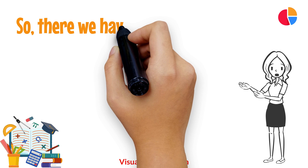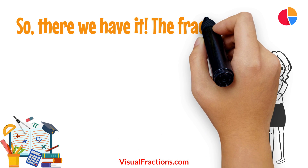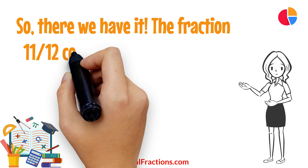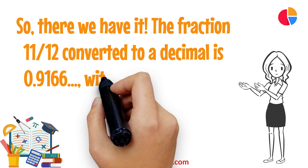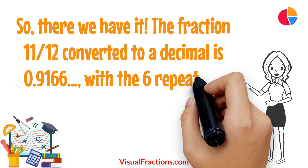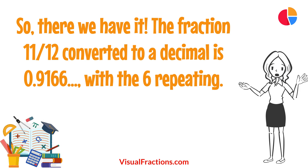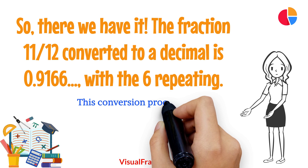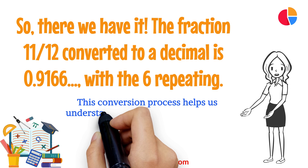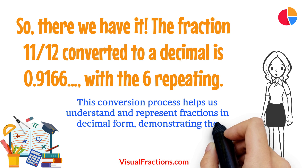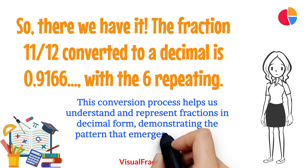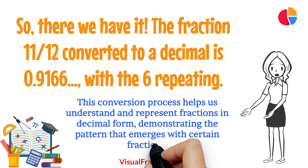So, there we have it. The fraction 11 twelfths converted to a decimal is 0.9166, with the 6 repeating. This conversion process helps us understand and represent fractions in decimal form, demonstrating the pattern that emerges with certain fractions.